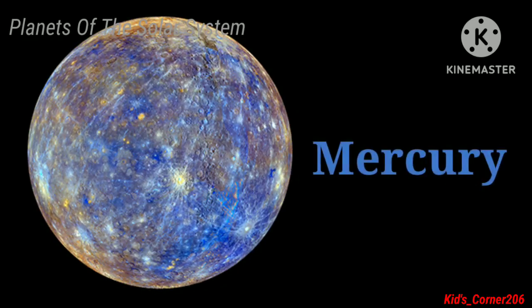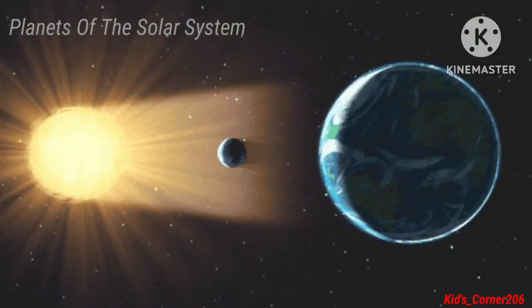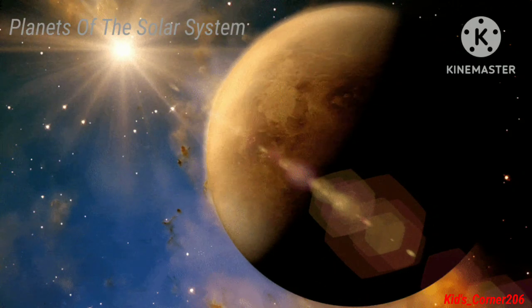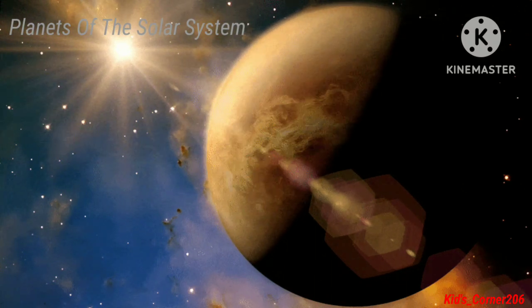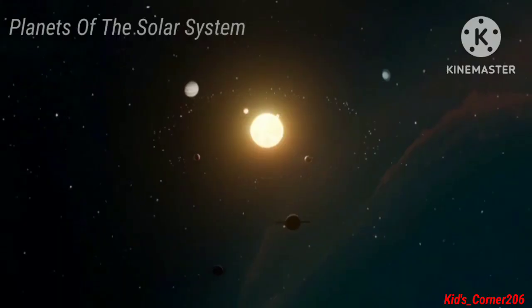The first planet of the solar system is Mercury. Mercury is the smallest planet in the solar system and nearest to the sun. It is extremely hot during the daytime and extremely cold during the night.